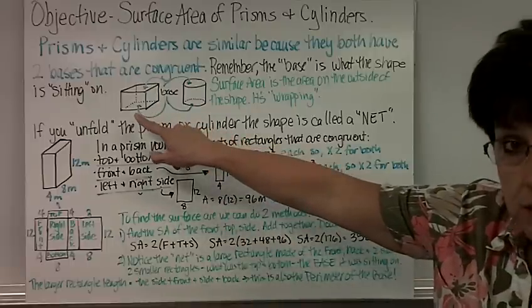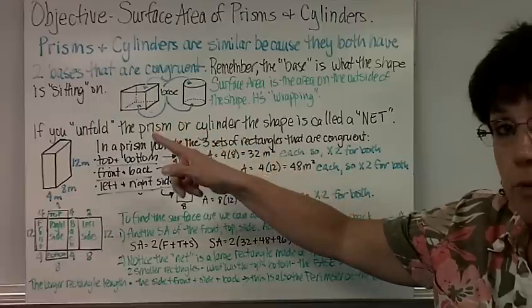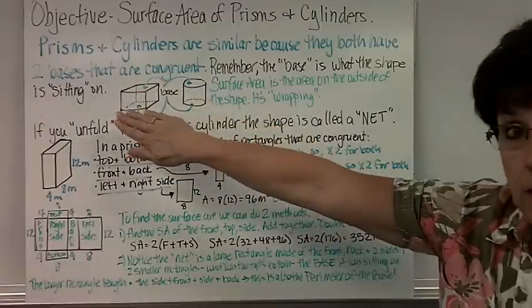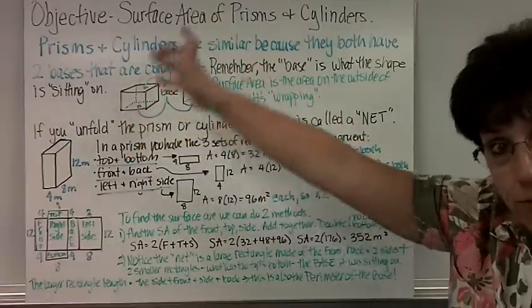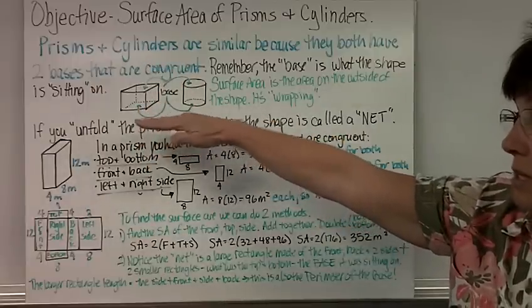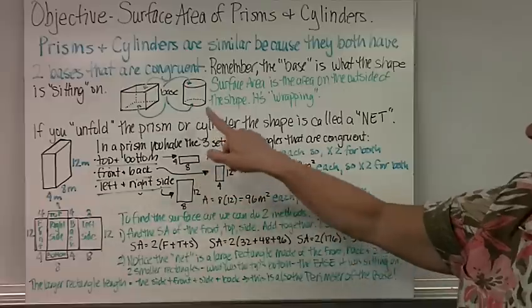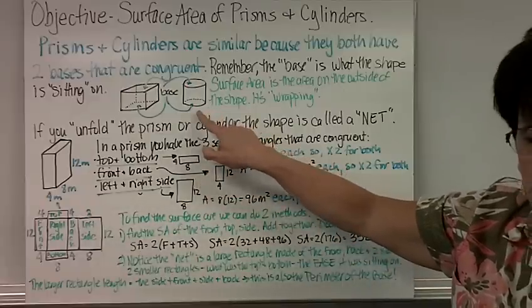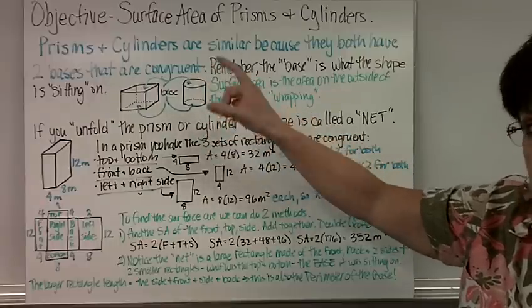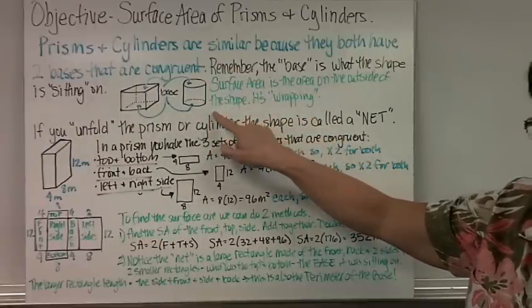In the prism, what's on the bottom and what's on the top are the same — that's the base. You could turn it in a different direction and that shape would be the base. Whatever is on the bottom, the same shape is on the top. In a cylinder, if you put it on the side it would roll, so the bottom and top are the same, and it has the same area.